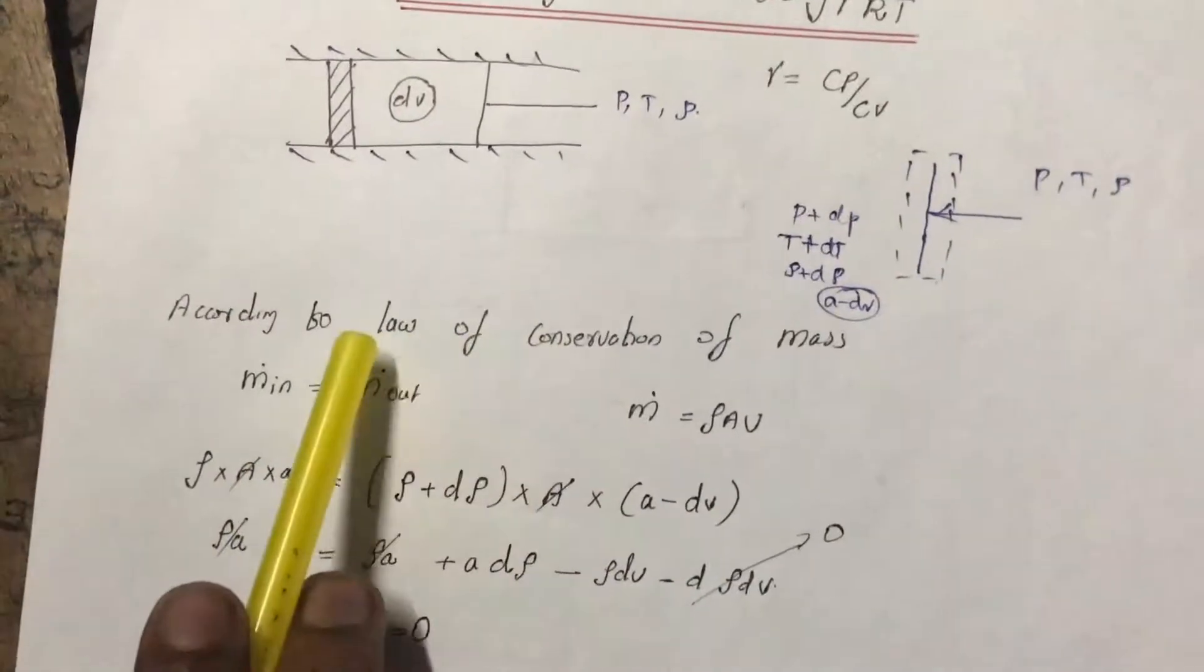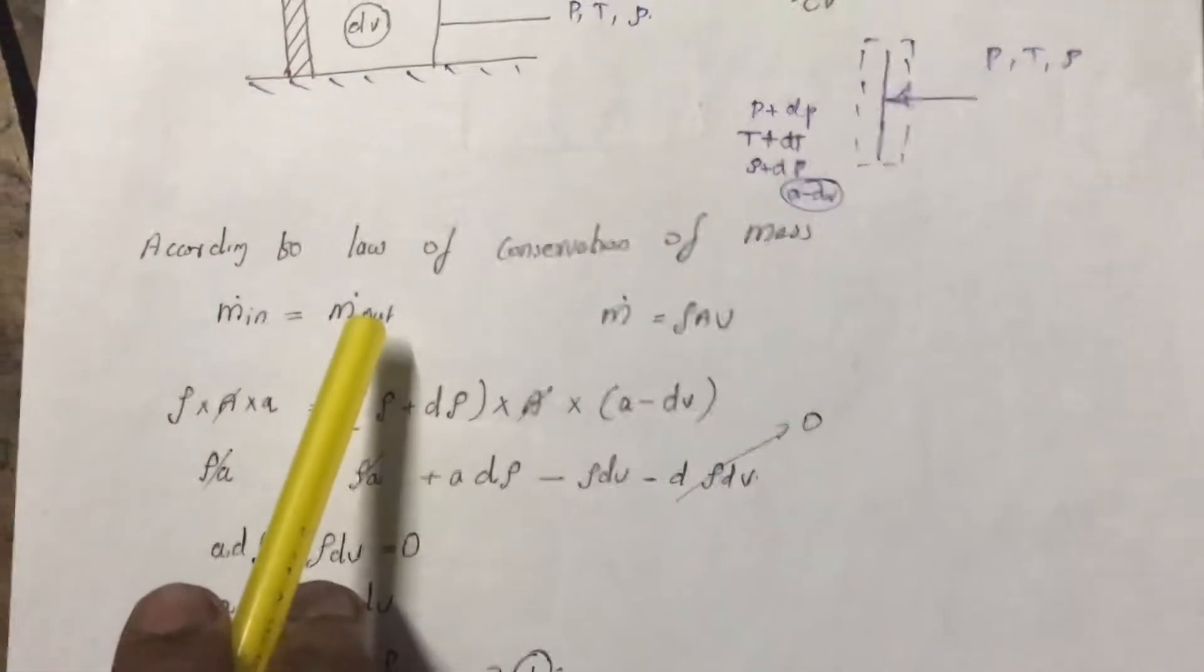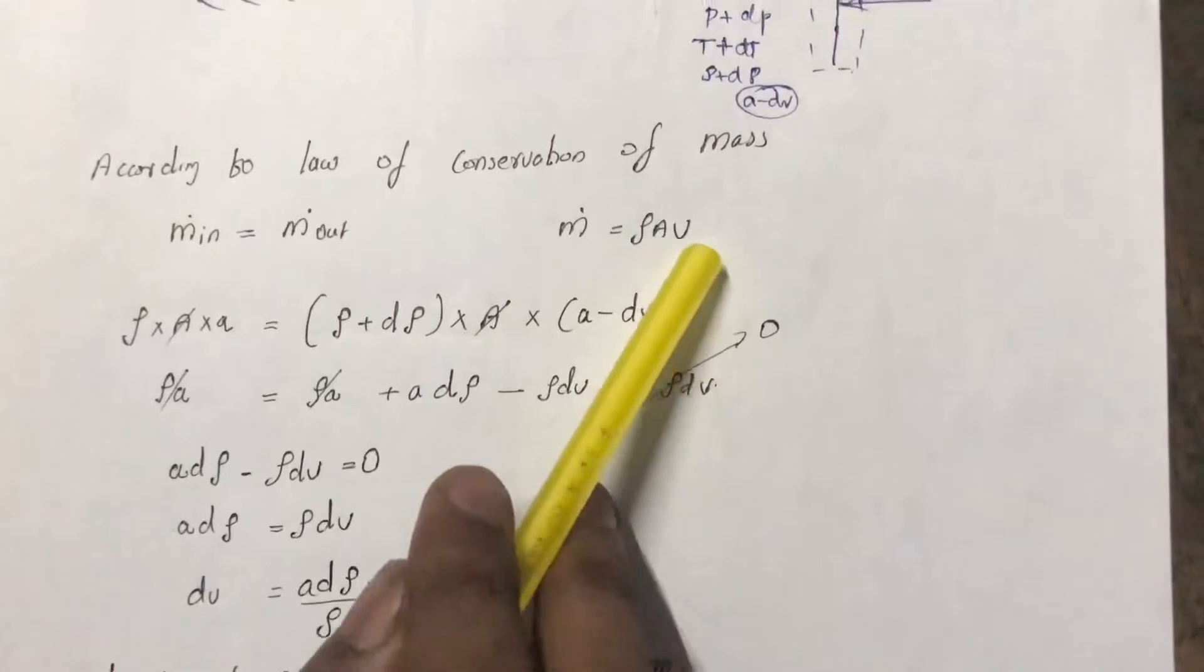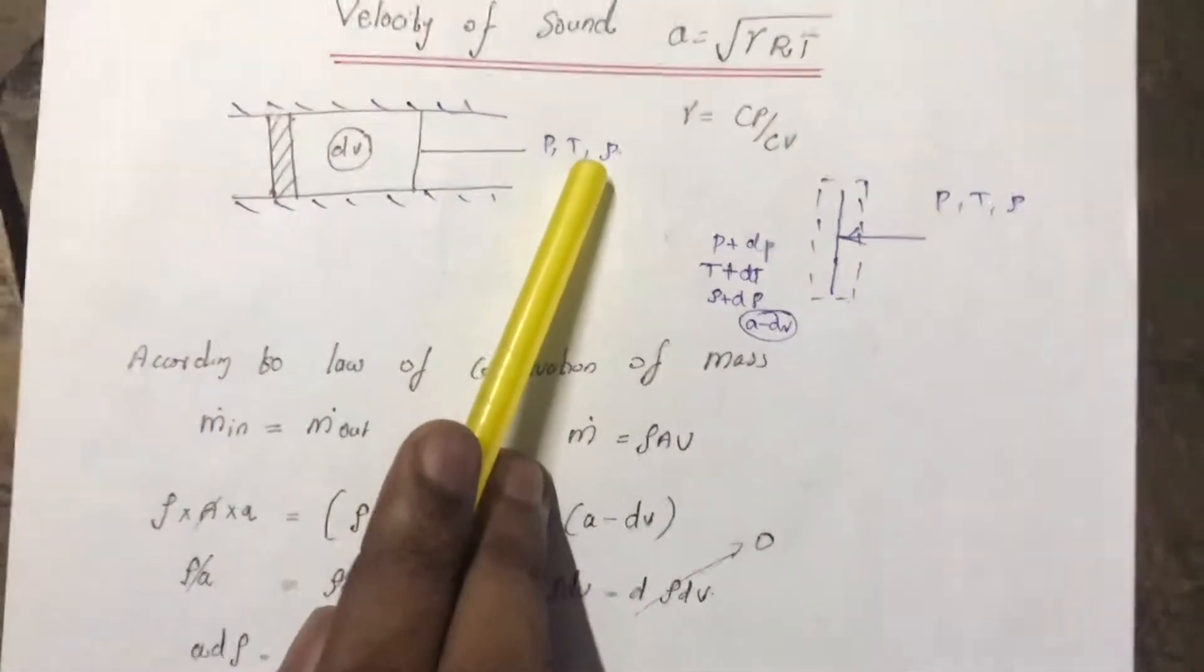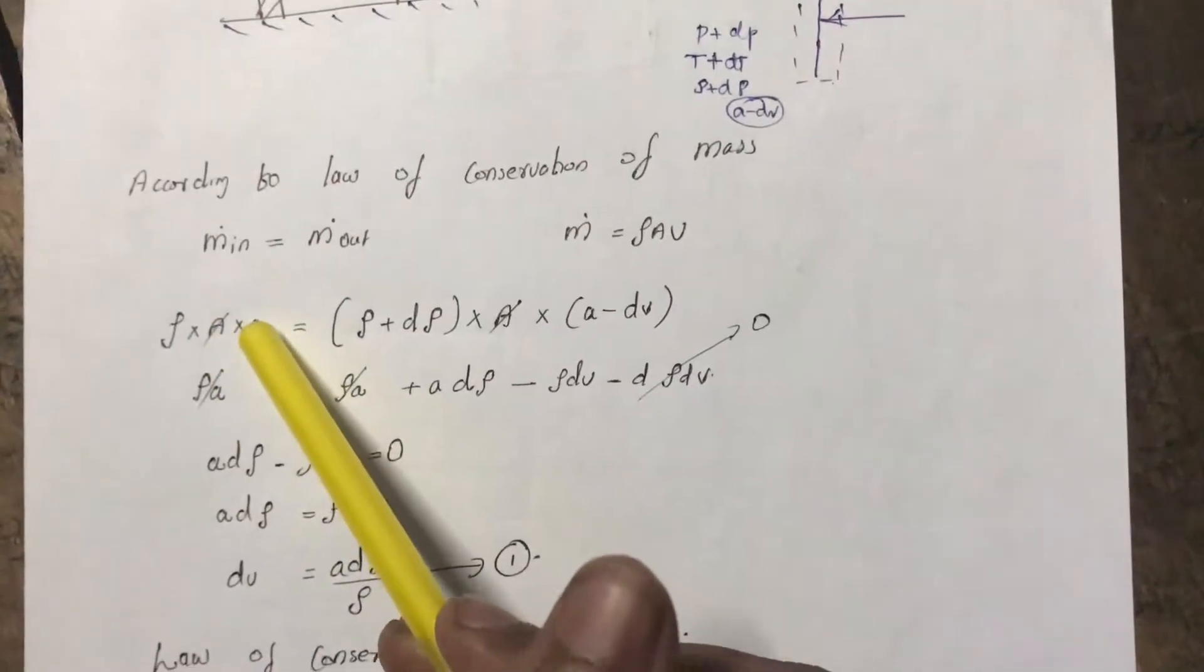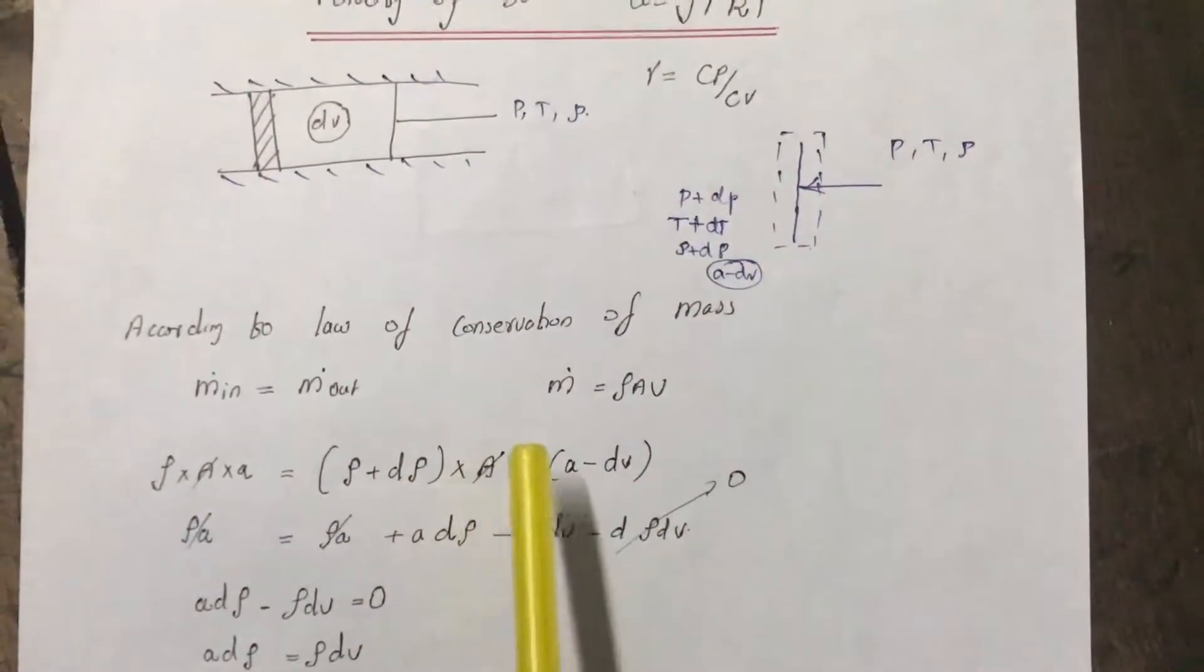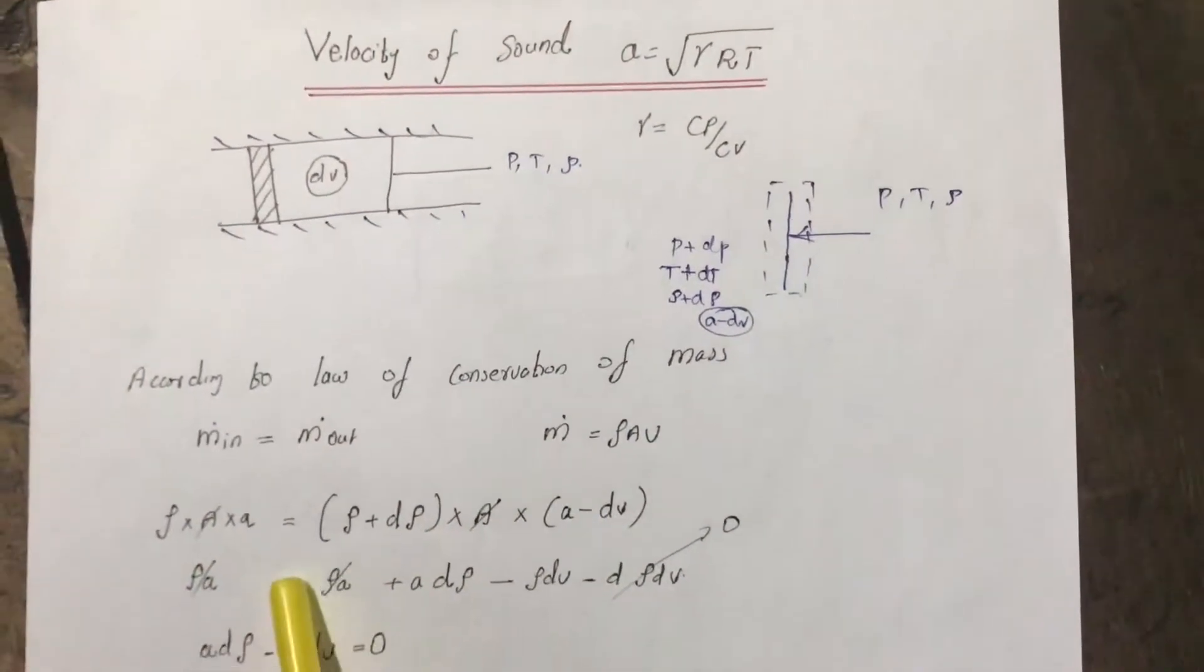According to the law of conservation of mass, mass flow rate is a constant, that is m dot in equals m dot out. We all know m dot is equal to rho A v, that is density into area into velocity. In the inlet condition, our density rho A v can be termed as rho into A into small a, that is the velocity of sound. Now our density changes as rho plus d rho in the second case. It becomes rho plus d rho into A into a minus dv, the final velocity. Since it is a constant area duct, the area gets cancelled out.